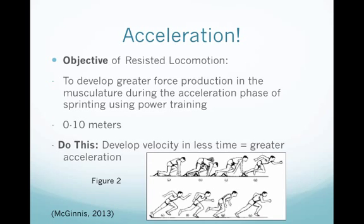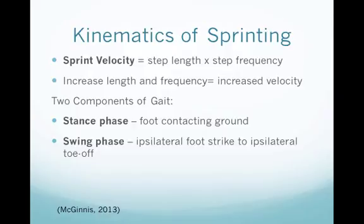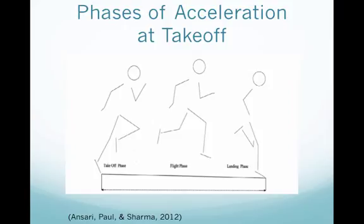We're going to develop velocity in less time to get greater acceleration. Kinematically, we're looking for step length and step frequency to assess velocity, and we want to increase both to increase velocity. There are two components of gait: the stance phase, when the foot contacts the ground, and the swing phase, when the ipsilateral foot goes from foot strike to toe-off. The phases of acceleration we'll examine are takeoff, flight phase, and landing phase — a cyclical motion in sprinting.